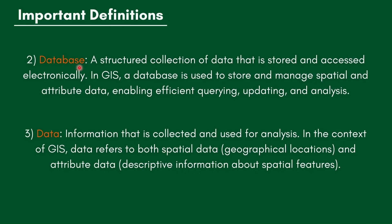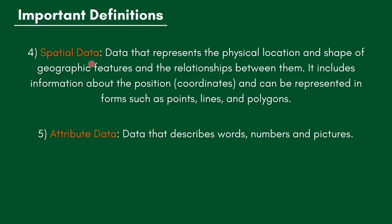A database is a structured collection of data that is stored and accessed electronically. In GIS, a database is used to store and manage spatial and attribute data, enabling efficient querying, updating, and analysis. Data is information collected and used for analysis — in GIS it refers to both spatial data (geographical locations) and attribute data (descriptive information about spatial features). Spatial data represents the physical location and shape of geographic features, including positions and coordinates, and can be represented as points, lines, and polygons.